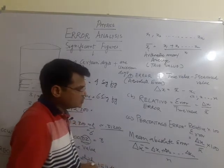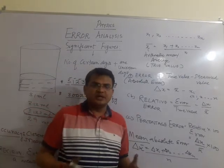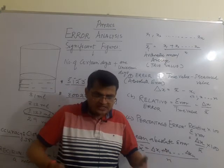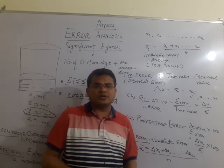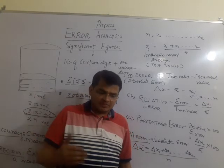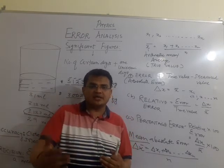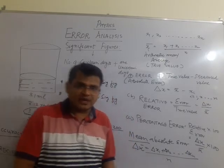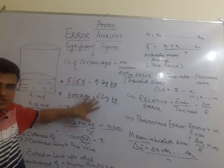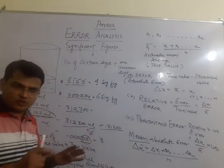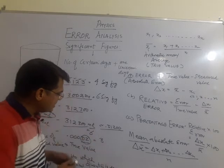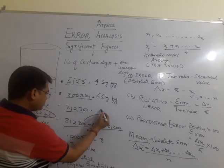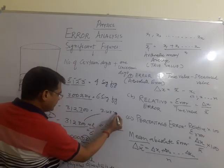In our next lecture, we will study the combination of errors — in addition, subtraction, multiplication, and division. Errors are a very important property; they are always additive in nature. Error represents the degree of uncertainty in any measurement.